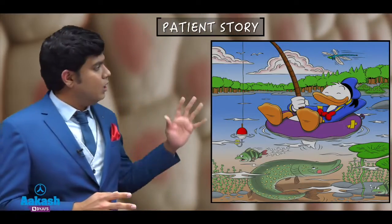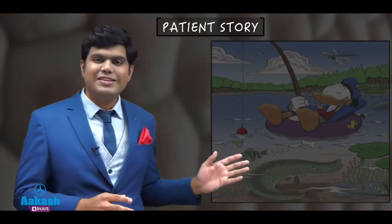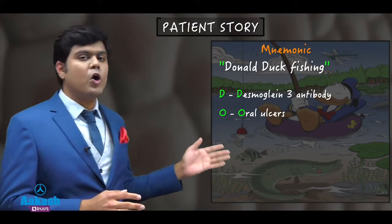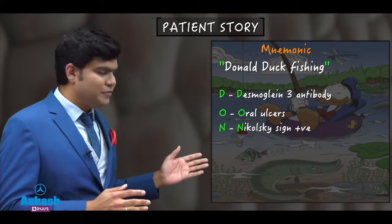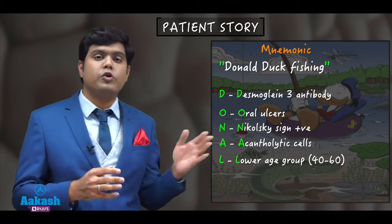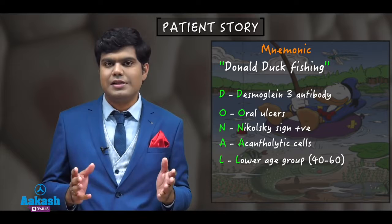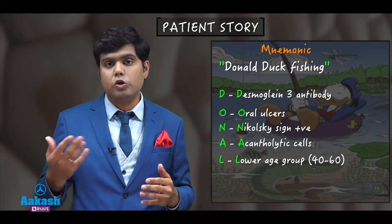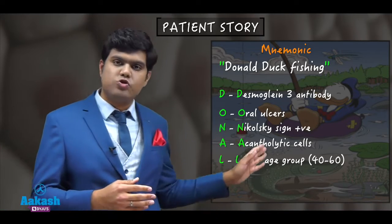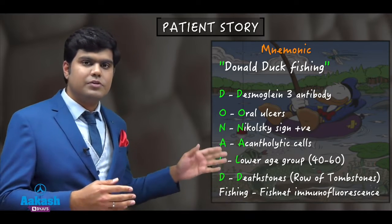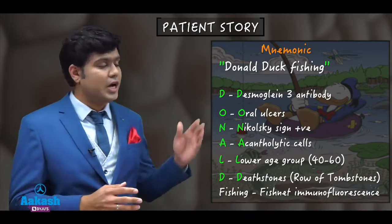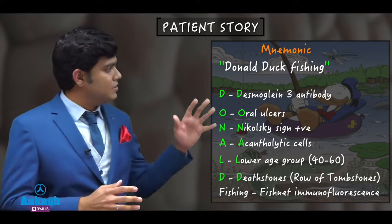To summarize all classical features of pemphigus vulgaris, here is a wonderful mnemonic: Donald Duck Fishing. D for Desmoglein 3 antibody, O for oral ulcers, N for Nikolsky sign positive, A for acantholytic cells, L for lower age group — 40 to 60 years, compared to bullous pemphigoid which affects 60 to 80 years. Another D is for tombstone appearance — the row of tombstones on histology. And Fishing stands for the fishnet pattern of immunofluorescence.